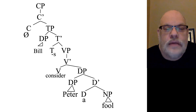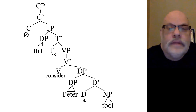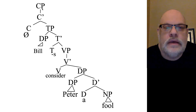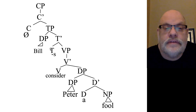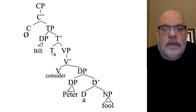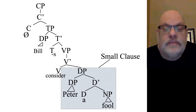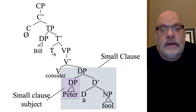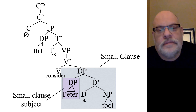Here's a sentence: 'John considers Peter a fool.' There are really two clauses here, even though one of them doesn't have a CP or TP. The main clause is the higher CP and TP — Bill is the subject of that. The S-suffix is the head of the TP and lowers down to attach onto 'consider' via affix hopping. But the rest of the sentence is the DP 'Peter a fool,' which is a small clause. We have a subject and a predicate phrase: Peter is the subject, attributed the property of being a fool, and Peter sits in the specifier of that DP.